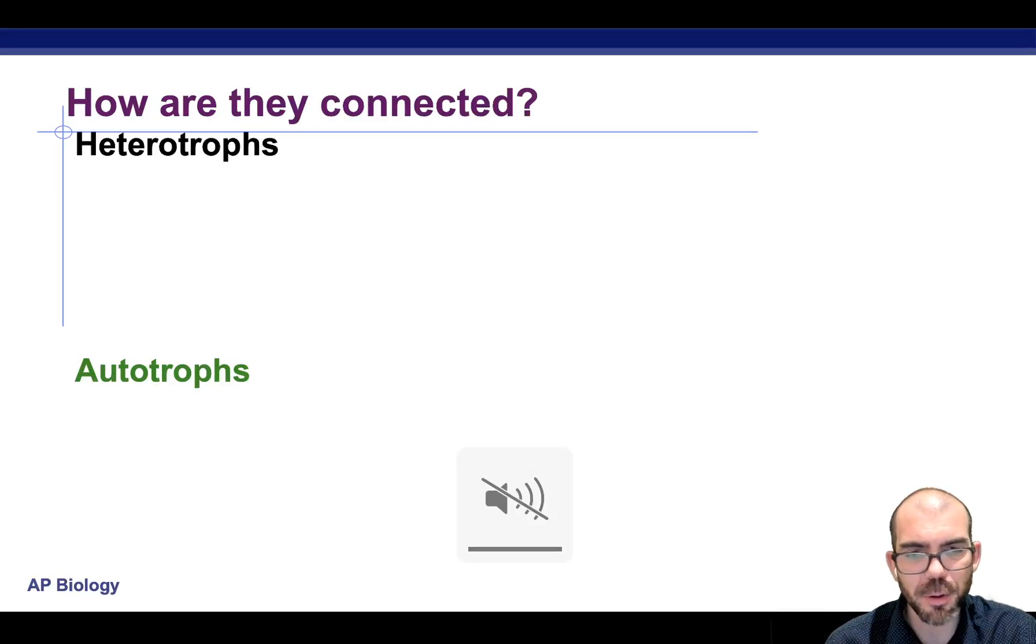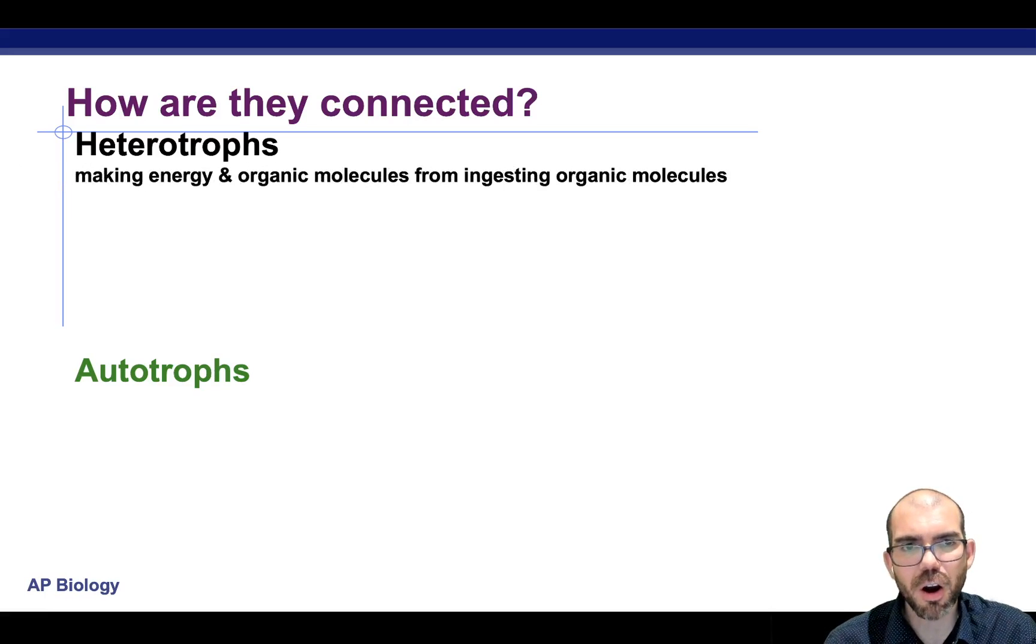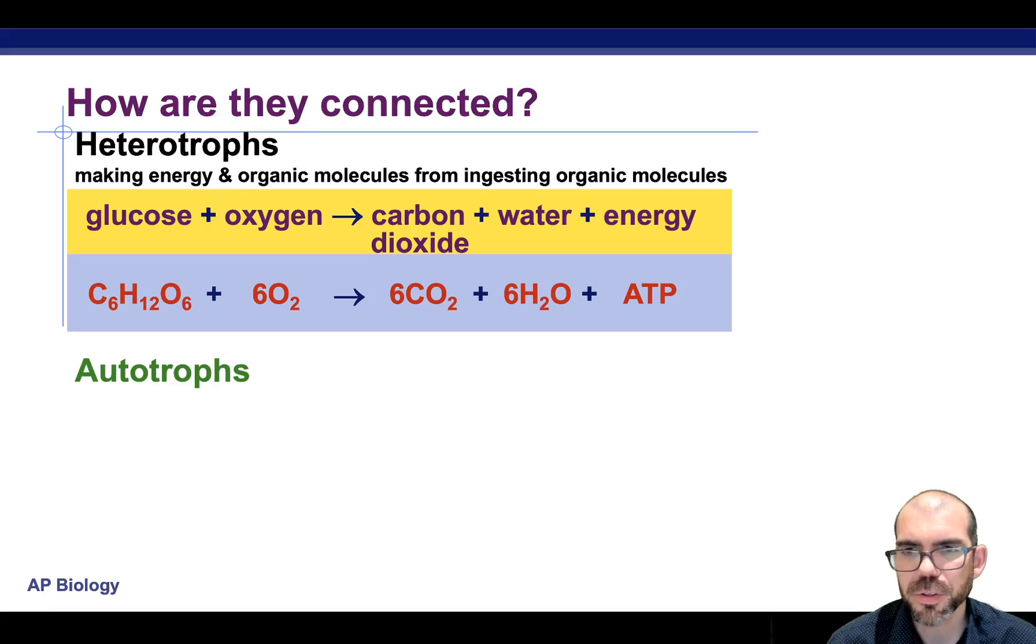So let's look at how they're both connected. Heterotrophs are ingesting their organic molecules. They're taking that glucose and they're oxidizing it with oxygen, breaking it down to form ATP for energy. As waste products, they're releasing CO2 and water. And so here you can see that oxidation, glucose is broken down again and again and released as CO2 and loses electrons as a result.